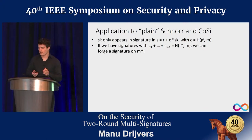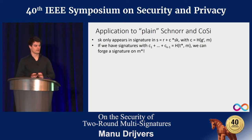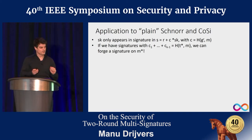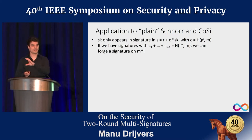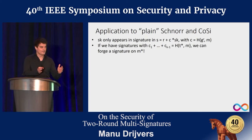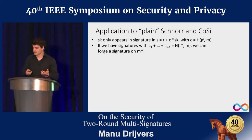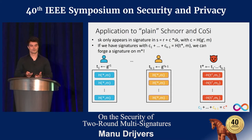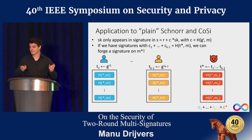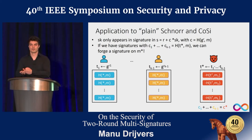Recalling the Schnorr scheme: the secret key appears in s = randomness + c × secret key, where c is a hash. If we obtain signatures whose c values have special structure — specifically, where c values add up to the hash of a different message — we can combine those signatures into a forgery without knowing the secret key. We translate finding such signatures into the K-sum problem: make K lists of different hashes, run Wagner's algorithm to find elements giving the needed structure, then combine signatures into a forged message.